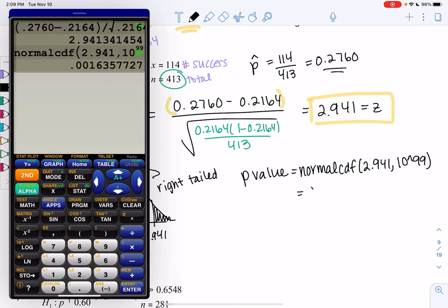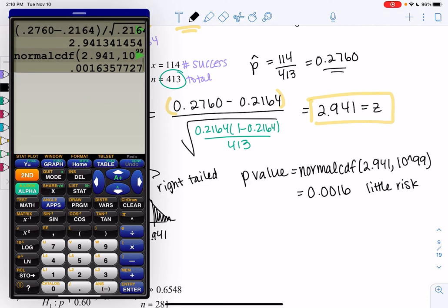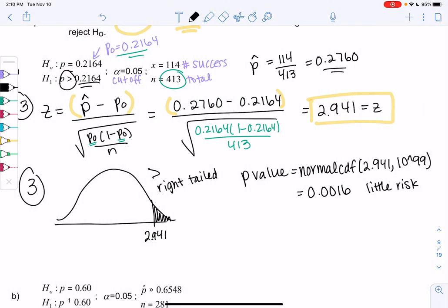Go ahead and calculate that and check that you get the same number. And we get a little risk, 0.0016. It's pretty unlikely that it's random if the percent actually is 21. So because it's so unlikely, we're going to reject that and say the percent is actually bigger. So that's why we reject. Very little risk.